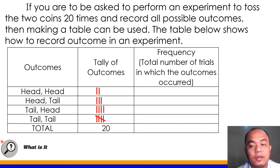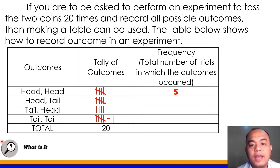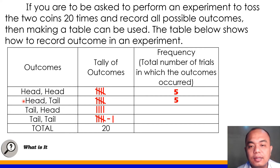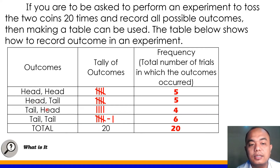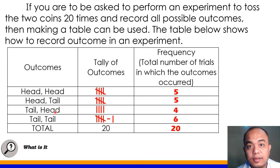Kapag umabot ng five, pwede mong gawin yan — isang bundle para madali siyang bilangin. Let's have now the frequency. We have now the frequency five for head and head — limang beses lumabas ang head to head na outcome. Same also sa head and tail — limang beses din siya na lumabas. Pwede rin yung tail at saka head — ang lumabas four times siya. And then tail and tail, we have six. So all in all, we have 20 lahat. Baka naguluhan kayo — yung first na nakasulat ay ang first coin, yung second na nakasulat dito ay yung second na coin. So magkaiba sila.